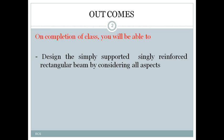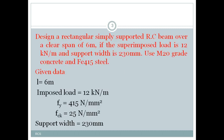Regarding the last class, we discussed the steps for designing a simply supported singly reinforced rectangular beam. Based on those steps we will design today. I have chosen one problem: design a rectangular simply supported reinforced concrete beam over a clear span of 6 meters, if the superimposed load is 12 kilonewton per meter, support width is 230 mm. Use M20 grade concrete and Fe415 steel.